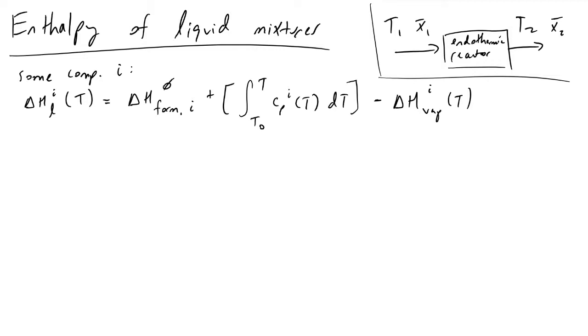If we were dealing with an endothermic reaction in practice, we would typically be supplying heat to it to shift equilibrium towards our products. So I will just write that in here that we have some kind of heat flow rate Q dot entering our endothermic reactor.